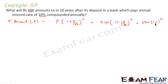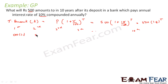We could solve this directly by putting t = 10, but we want to show that a pattern of GP emerges. After the 1st year the amount is 500 × 1.1, after the 2nd year it is 500 × 1.1², after the 3rd year 500 × 1.1³, and after the 4th year 500 × 1.1⁴, all the way to 500 × 1.1¹⁰ after 10 years.